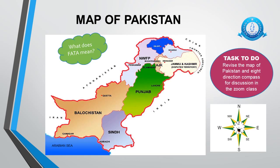Here you can see a map of Pakistan with a compass on the right. With the help of this compass, we are going to find directions of places on the map. You can see 4 provinces with their provincial capitals and the neighboring countries. If you have to find the direction of Punjab, you can see that it is starting from north and coming down towards east, so its direction is northeast. Sindh is at the bottom of the map, so its direction is south. Balochistan is starting from south and going up towards west, so its direction is southwest. KPK is on the top and its direction is north.